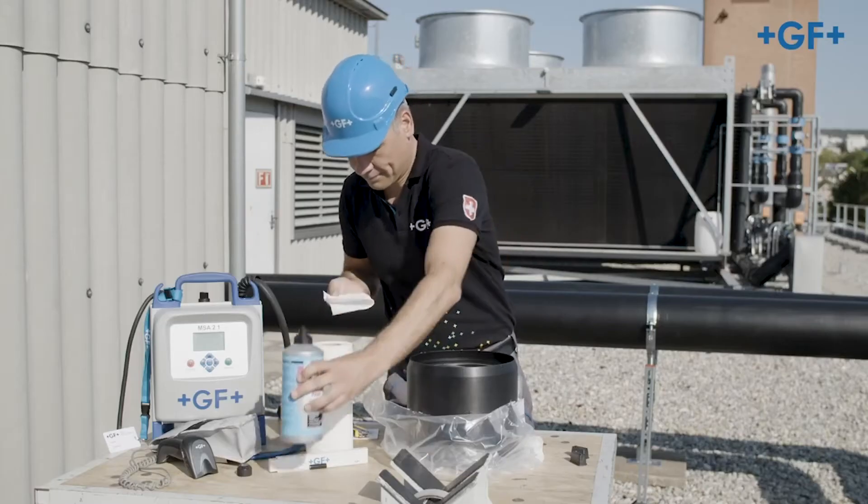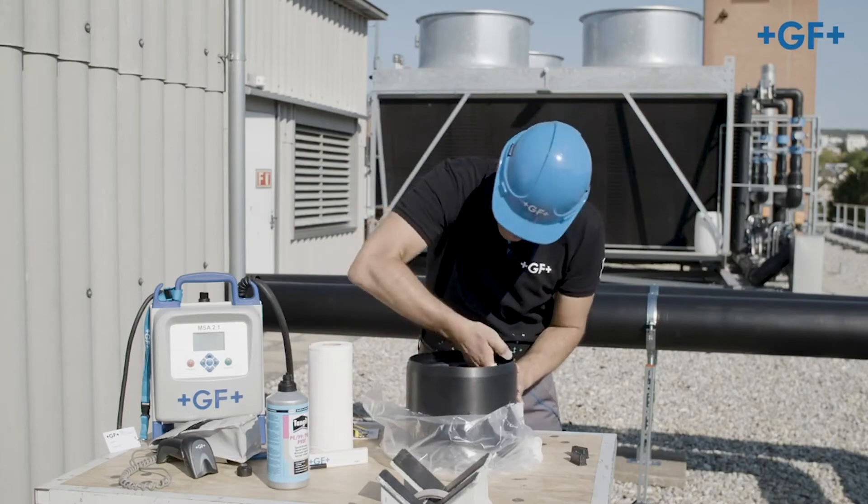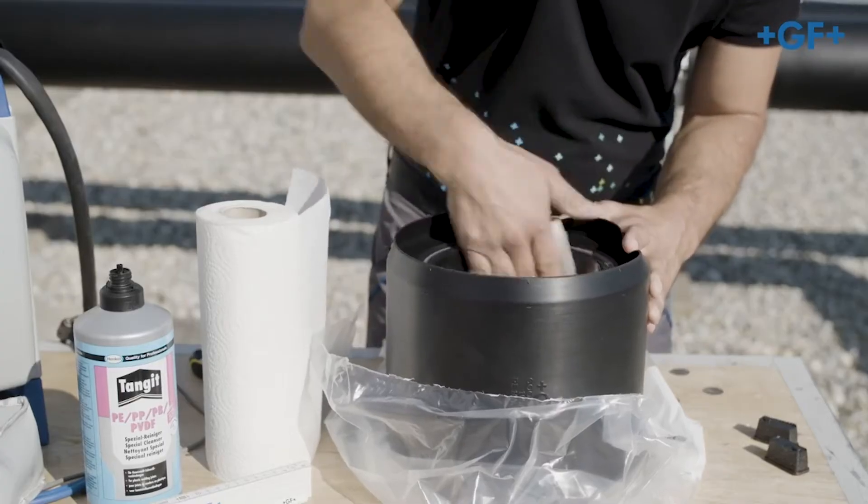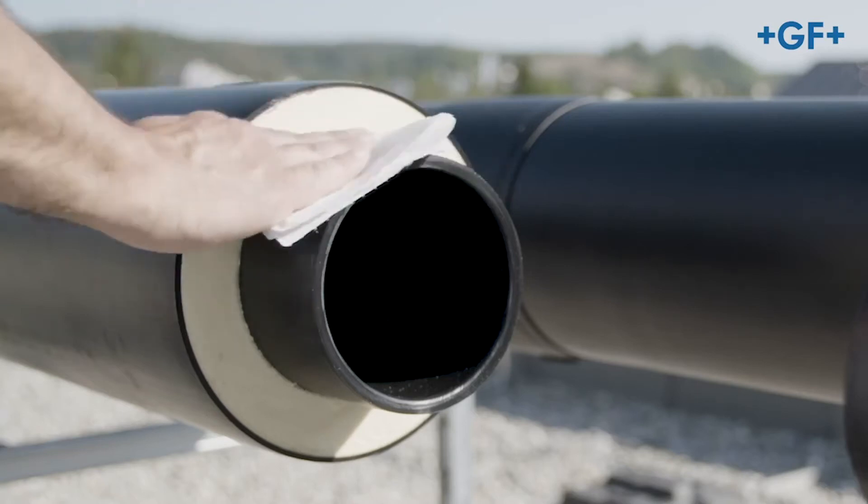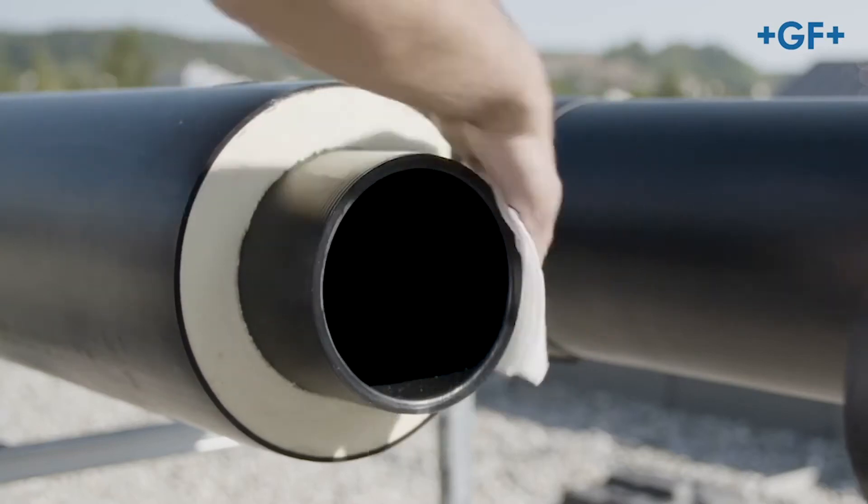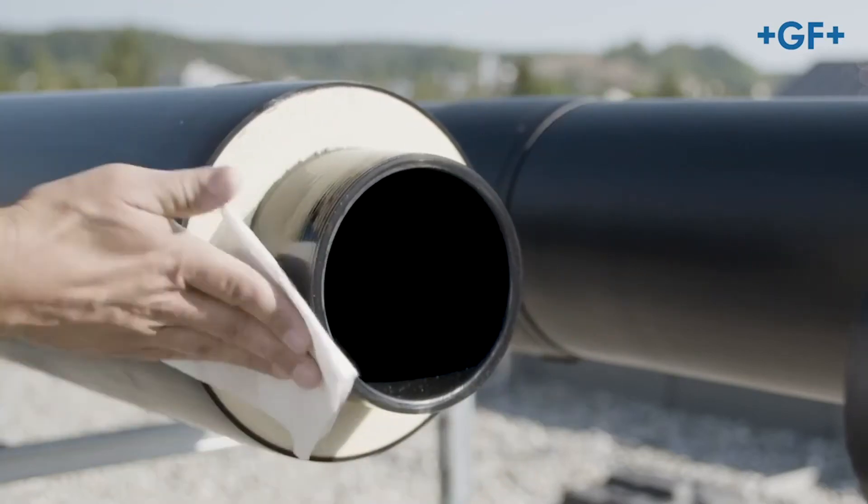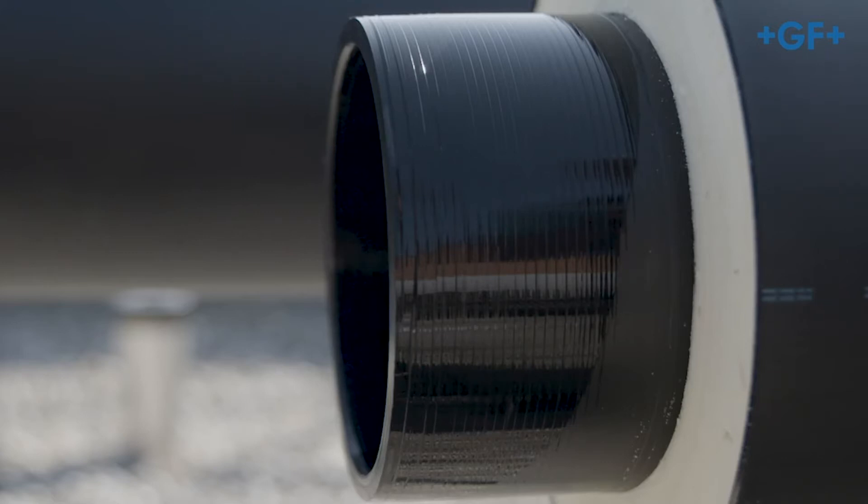Clean the welding surfaces of the CoolFit PE Plus fittings and pipes. For this purpose, use 90% or greater isopropyl alcohol and a clean, lint-free plain cloth. Wait until the cleaner has evaporated.